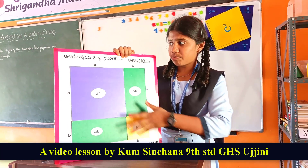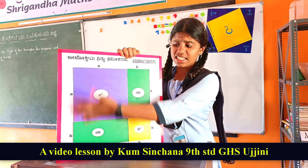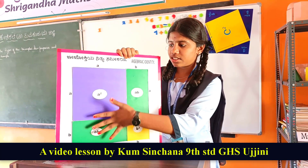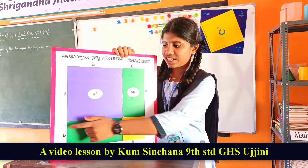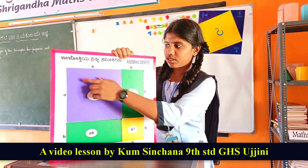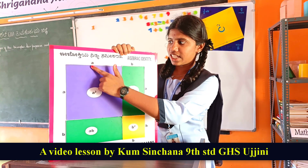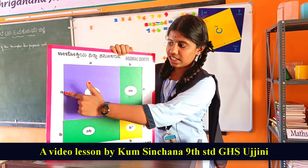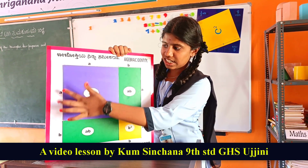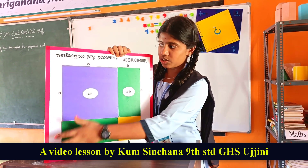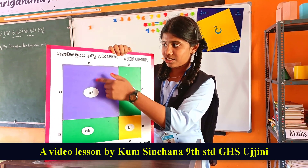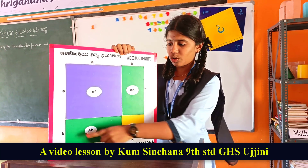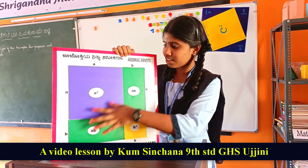The area of a square is side into side. We take one side as (a + b) and another side as (a + b), so the area is (a + b) square.